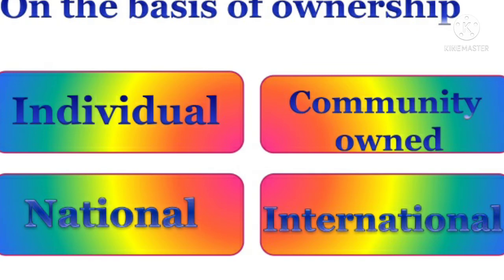The last ownership category is international resources. There are international institutions which regulate some resources; those all come under international resources. So on the basis of ownership, there are four types of resources.